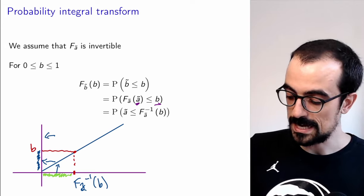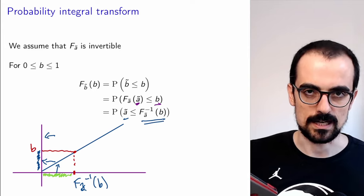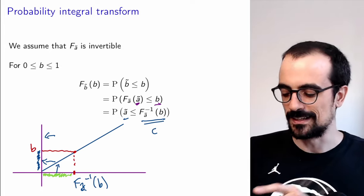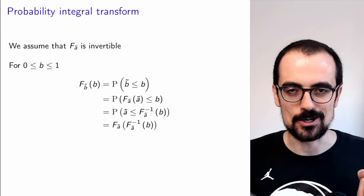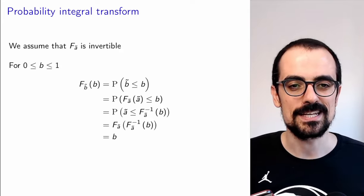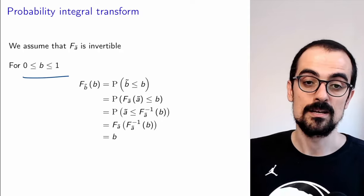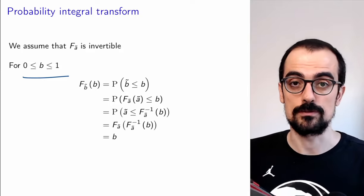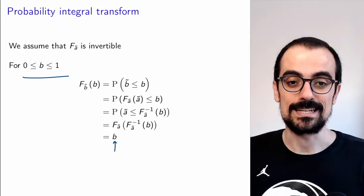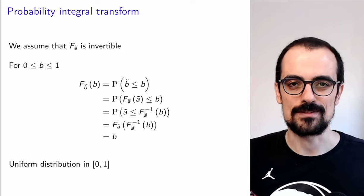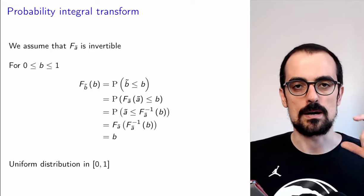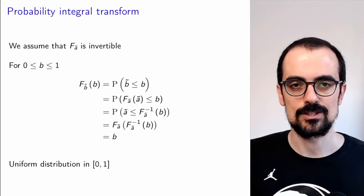We're interested in the event that the random variable A is smaller or equal to F⁻¹(b). What is this probability? It's just the CDF evaluated at that value. Plugging in, we use the fact that this is actually the inverse of the CDF, and we find that for values of b between 0 and 1 — because those are the only values you get when you apply the CDF — the CDF of this new random variable equals b. Taking the derivative, we realize the new random variable is always uniform, no matter what distribution A has. Applying the CDF to a random variable always gives you the uniform distribution.